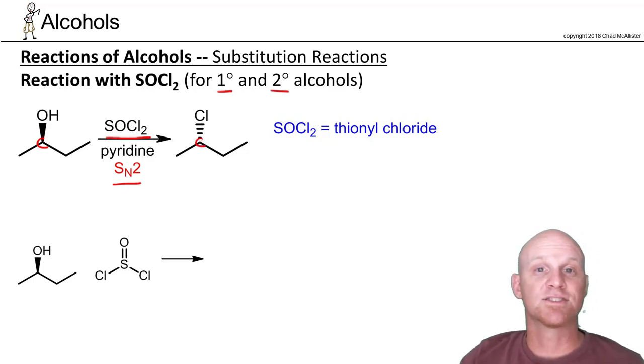Some people memorize this as so cool too, or something like that. But this is one that it's actually worth knowing the name of as well. So SOCl2 is called thionyl chloride. When you see thio in a name, you know that that compound has sulfur in it. So this is thionyl chloride.